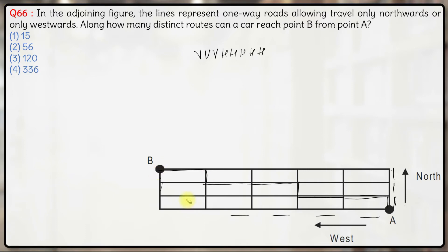So basically the number of ways of going from A to B will effectively be the number of ways of arranging three vertical steps and five horizontal steps.